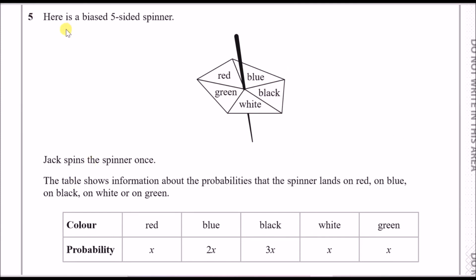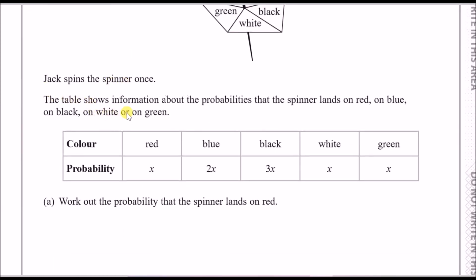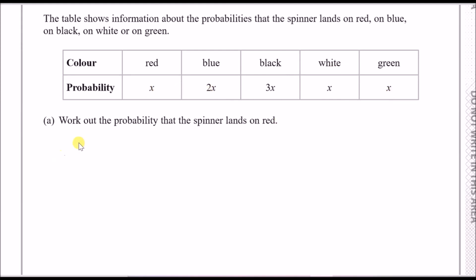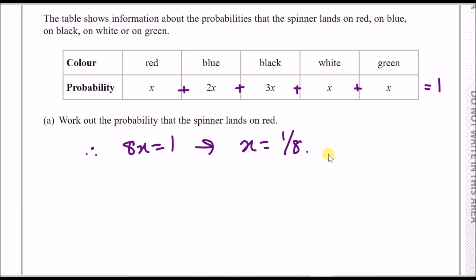Number five: a biased five-sided spinner can land on red, blue, black, white, or green, with probabilities in terms of x. For probability, all outcomes must sum to 1. Adding them up: x + 2x + 3x + ... = 8x = 1, so x = 1/8. The probability of landing on red is x = 1/8.